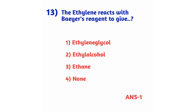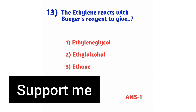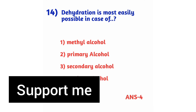Question number 13: Ethylene reacts with Bayer's reagent to give — option 1: ethylene glycol, option 2: ethyl alcohol, option 3: ethylene, option 4: none. Ethylene reacts with Bayer's reagent to give ethylene glycol. The right answer is option 1, ethylene glycol.